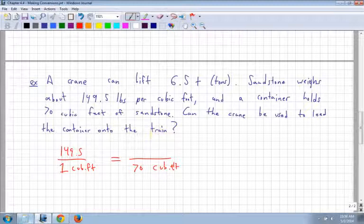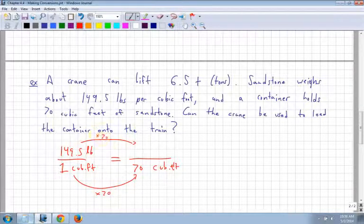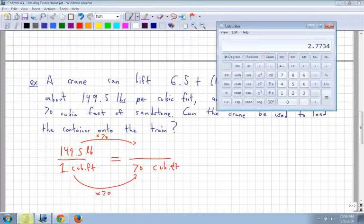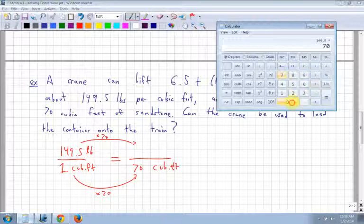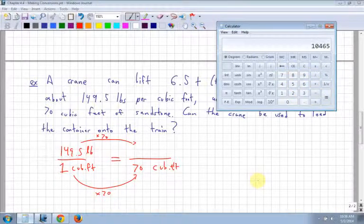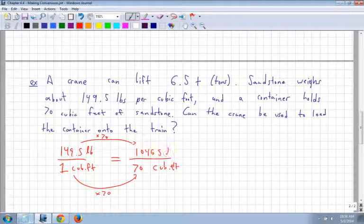Can the crane be used to load the container into the train? Well, let's see here. A crane can lift 6.5 tons. So we know we have to convert everything to tons eventually to compare. And right now, everything is in terms of pounds. So I have to convert my pounds to tons. So I have 1 cubic foot to 70 cubic feet. That's a multiplication of 70. So I know I have to times the top by 70. That's why it's a really good idea to have unit conversions. Because it's very simple. So 149.5 times 70 is 10,465. And remember, that is in pounds.